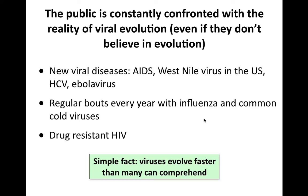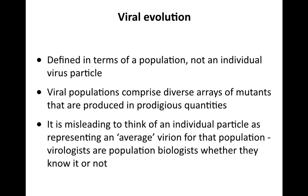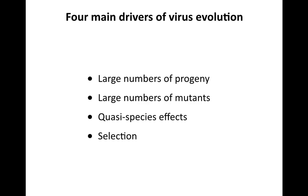When we talk about virus evolution, we always define it in terms of a population of viruses, not an individual virus particle. Virus populations are actually huge arrays of mutants made at very high levels. A particle is not what is evolving — it's the population. We shouldn't think of individual virus particles as the average of a population; we have to study the population as a whole. This has become clear only in the last 20 years or so. Virologists are, in fact, population biologists, whether they know it or not.